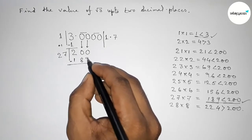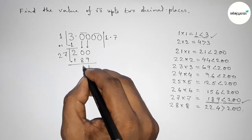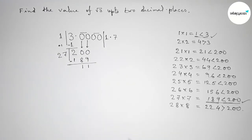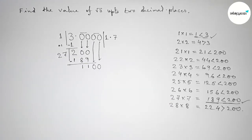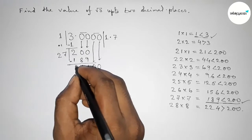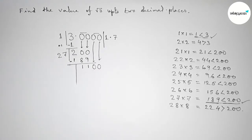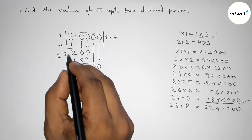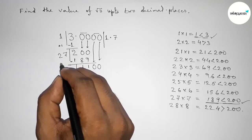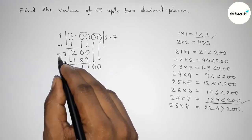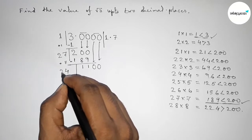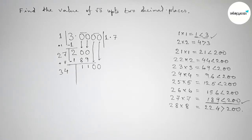Subtracting 189 from 200 gives 11. Now write down the remaining pair of zeros, making it 1100, and draw a division line. The last digit of the quotient is 7, so we add 7 to the divisor 27: 27 + 7 = 34, giving us new divisor 34.